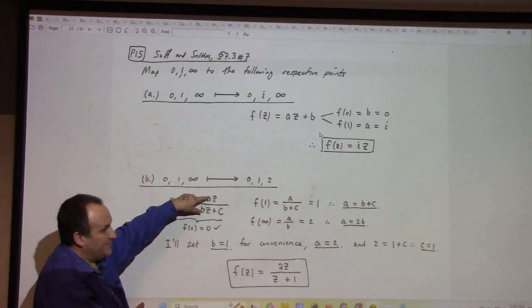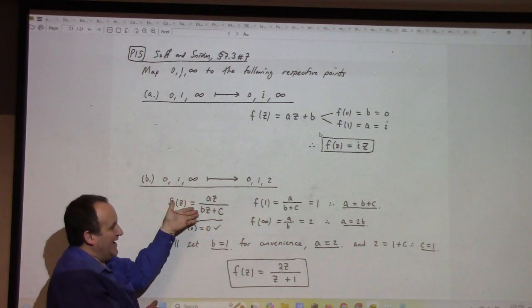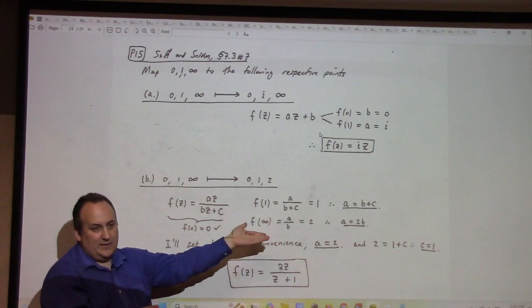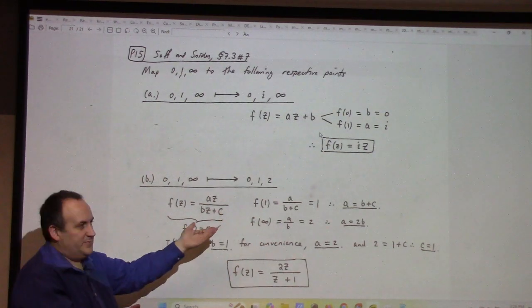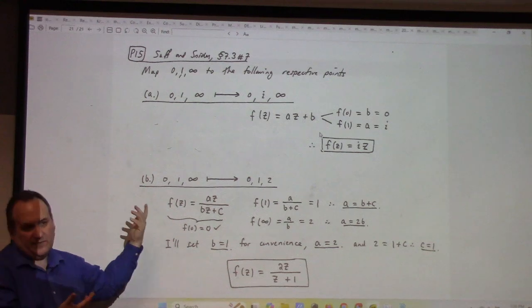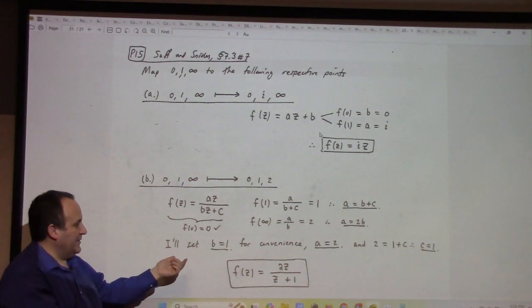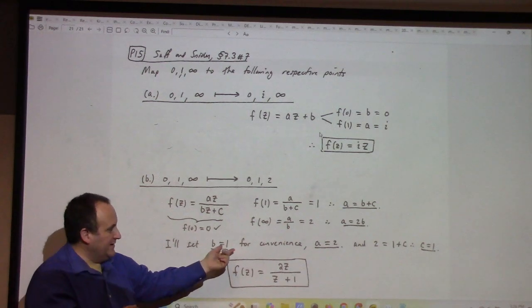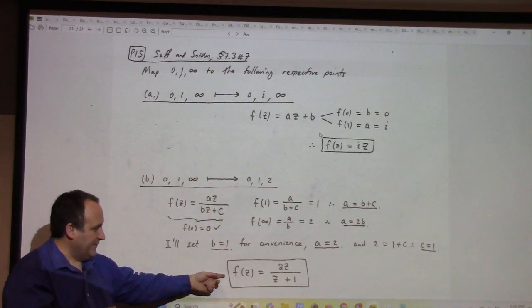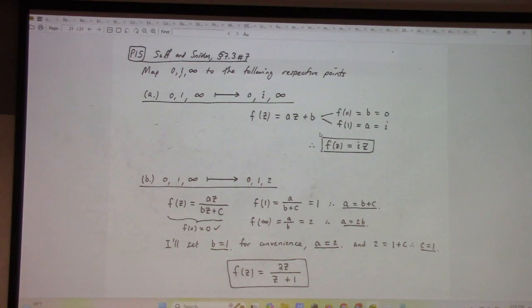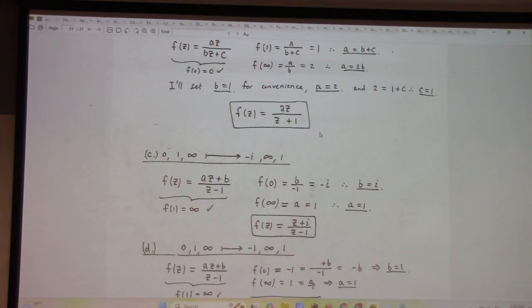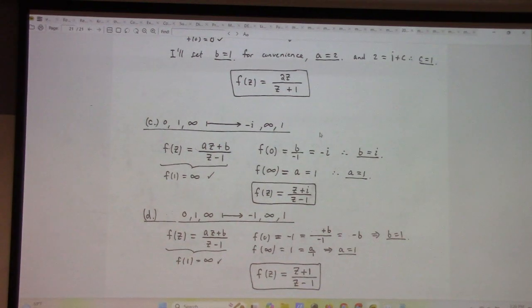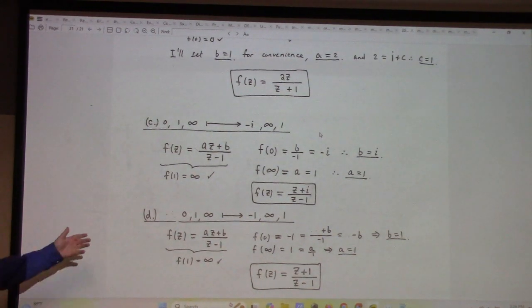So f of infinity is a over b. Well, that equals 2. And I get this and that. But the thing is, I've got one more letter than I need. Because you could absorb the a or the b. You could divide this by a and basically bring the a in the numerator in the denominator. I don't need three things. I could have just put a equals 1 from the outset. I should have. So anyway, eventually I decided to put b equals 1. And when I do that, it gives me a is 2 and c is 1. There's my formula. Which is in the back of the book. I checked.